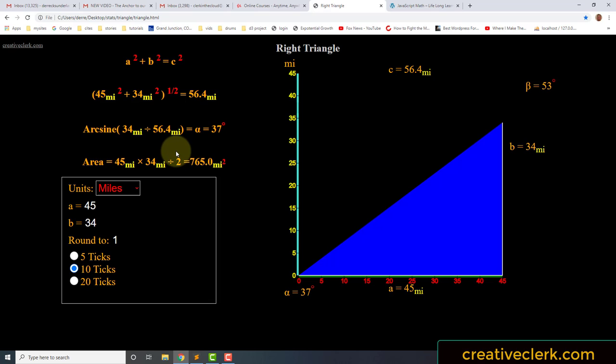So basically, you would use the Pythagorean Theorem to do a lot of different calculations. Suppose you knew this side of a building, and you knew how many feet you had to anchor some kind of rope or cable.